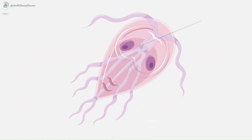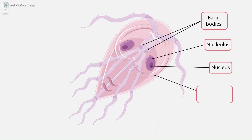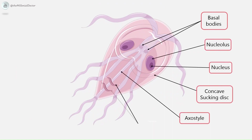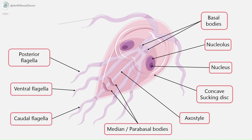All the body organs are paired. Dorsally it is convex, and ventrally it has a concave sucking disc which helps in its attachment to the intestinal mucosa. It is bilaterally symmetrical and possesses 1 pair of nuclei, 4 pairs of flagella, blepharoplasts from which the flagella arise (4 pairs), 1 pair of axostyles running along the midline, and 2 sausage-shaped parabasal or median bodies lying transversely posterior to the sucking disc. The trophozoite is motile with a slow oscillation about its long axis, often resembling a falling leaf.